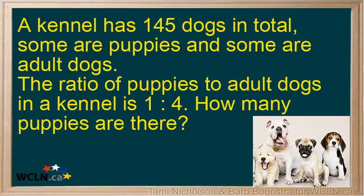A kennel has 145 dogs in total. Some are puppies and some are adult dogs. The ratio of puppies to adult dogs in a kennel is 1 to 4. How many puppies are there? First, you have to read the question carefully. The question tells you there are 145 dogs.